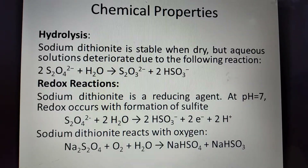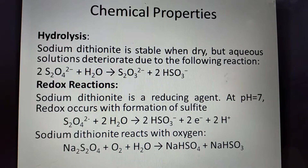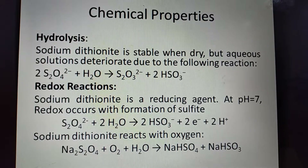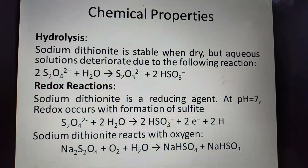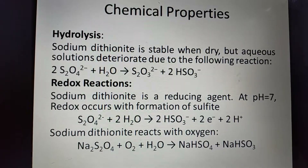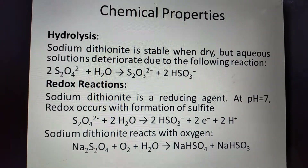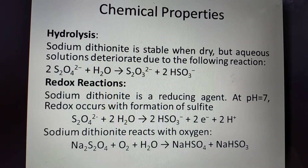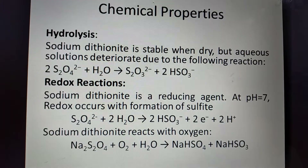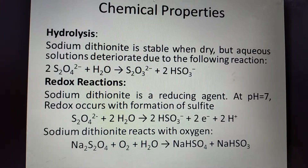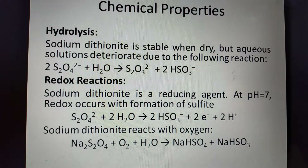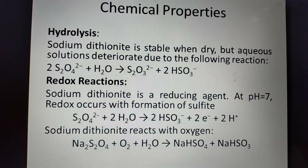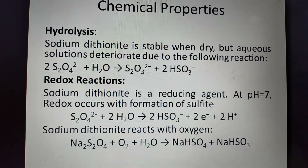This is due to the following reaction: the dithionite ion S₂O₄²⁻ + H₂O → S₂O₃²⁻ + HSO₃⁻ (hydrogen sulfite). Redox reaction: sodium dithionite is a reducing agent at pH 7, and redox occurs with formation of sulfate/hydrogen sulfite: HSO₃⁻ + 2e⁻ + 2H⁺. Sodium dithionite reacts with oxygen to form sodium hydrogen sulfate.